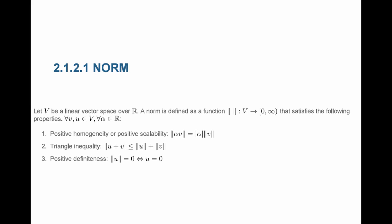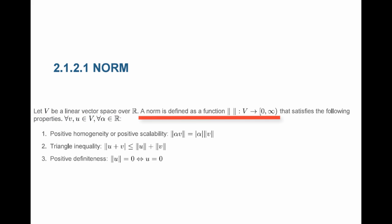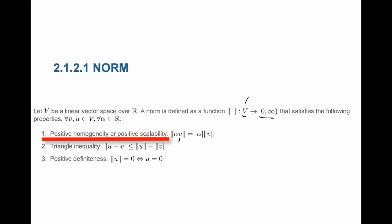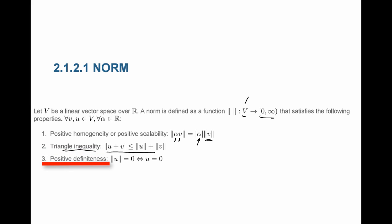Formally, a norm function on a linear vector space V over ℝ is a function defined on V that takes vectors and gives positive real numbers or zero. It must satisfy: (1) the norm of alpha·v equals the absolute value of alpha times the norm of v; (2) the triangle inequality; and (3) positive definiteness — the norm of a vector equals zero if and only if the vector equals zero.